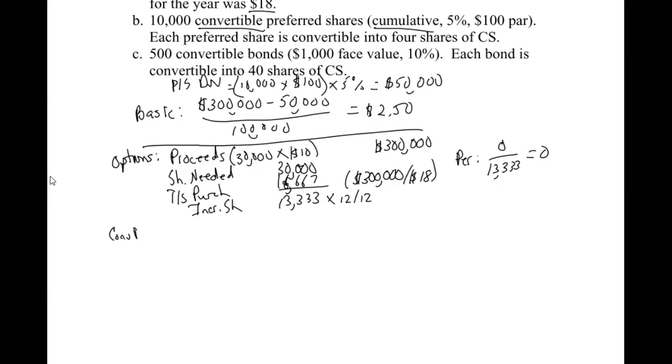So let's look at the convertible preferred shares now. So convertible. So remember, on our convertibles, we're looking at our numerator effect and our denominator effect. Remember, this is preferred stock. It is cumulative, which means we backed out the dividend in basic.